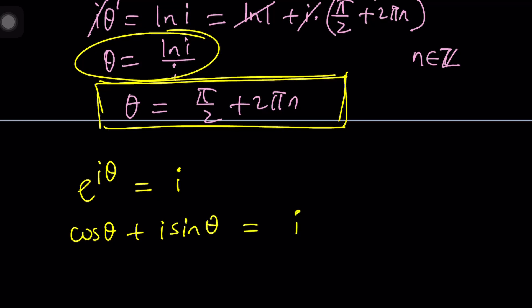And to be able to compare them, you basically write i as 0 plus 1i, right? And then compare the real parts to real parts. So cosine θ is supposed to be 0, and sine θ is supposed to be 1.